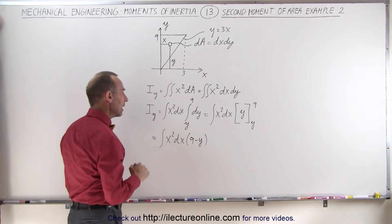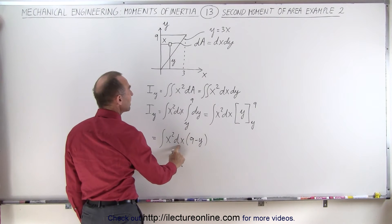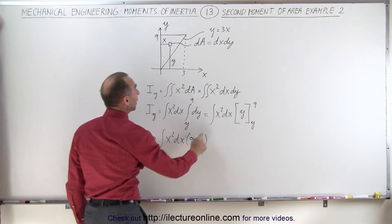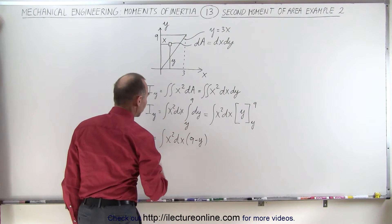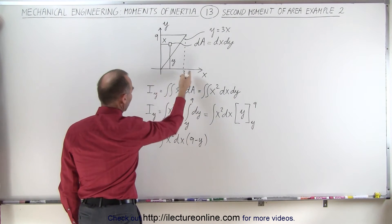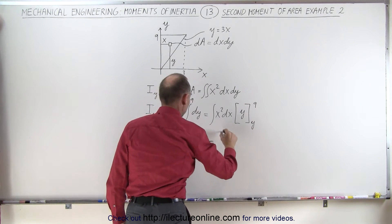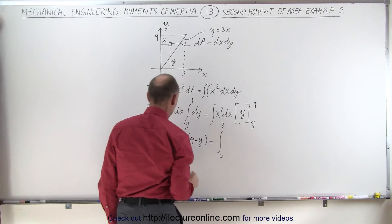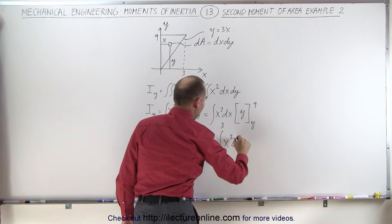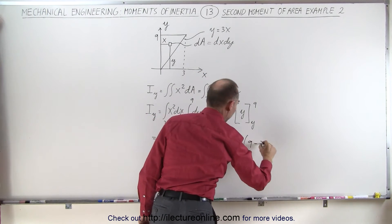Now you can see that you still have a y here when you have a differential of dx, so we have to replace this y by the 3x over there. And the limits, then, since we're going to integrate over dx, is going to go from 0 to 3. So the limits will be from 0 to 3, and this becomes equal to the integral from 0 to 3 of x squared dx times 9 minus, instead of y, we'll write y equals 3x.